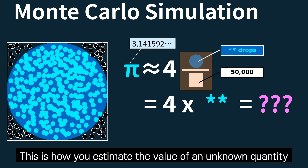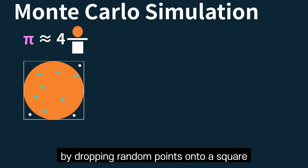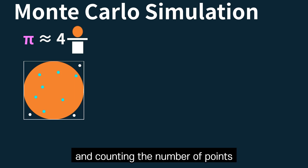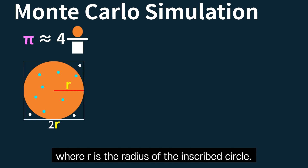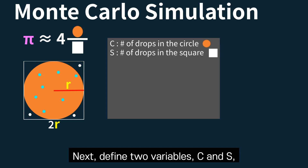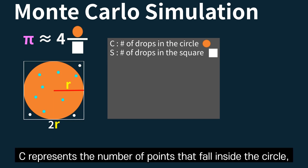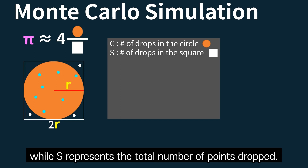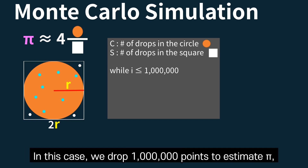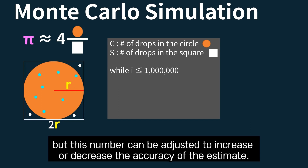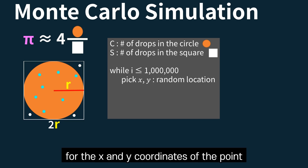This is how you estimate the value of an unknown quantity using Monte Carlo simulation. To estimate pi, drop random points onto a square and count the number that fall inside the inscribed circle. First, define a square of side length 2r, where r is the radius of the inscribed circle. Next, define two variables, c and s, to track the number of drops in the circle and in the square respectively. Use a loop — in this case, dropping 1 million points — though this number can be adjusted to increase or decrease the accuracy. In each drop, generate random values for the x and y coordinates using a random number generator.